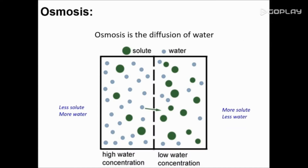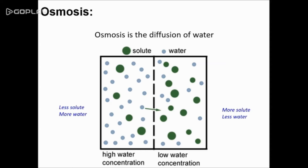The diffusion of water is known as osmosis. Looking at our diagram, we can see that there are more water molecules — the blue spheres — on the left compared to the right, and over time the water molecules will move from an area of high concentration to an area of low concentration. There is also an inverse relationship with solute molecules: when you have more water molecules you will have less solute molecules, and when you have less water molecules you will have more solute molecules.